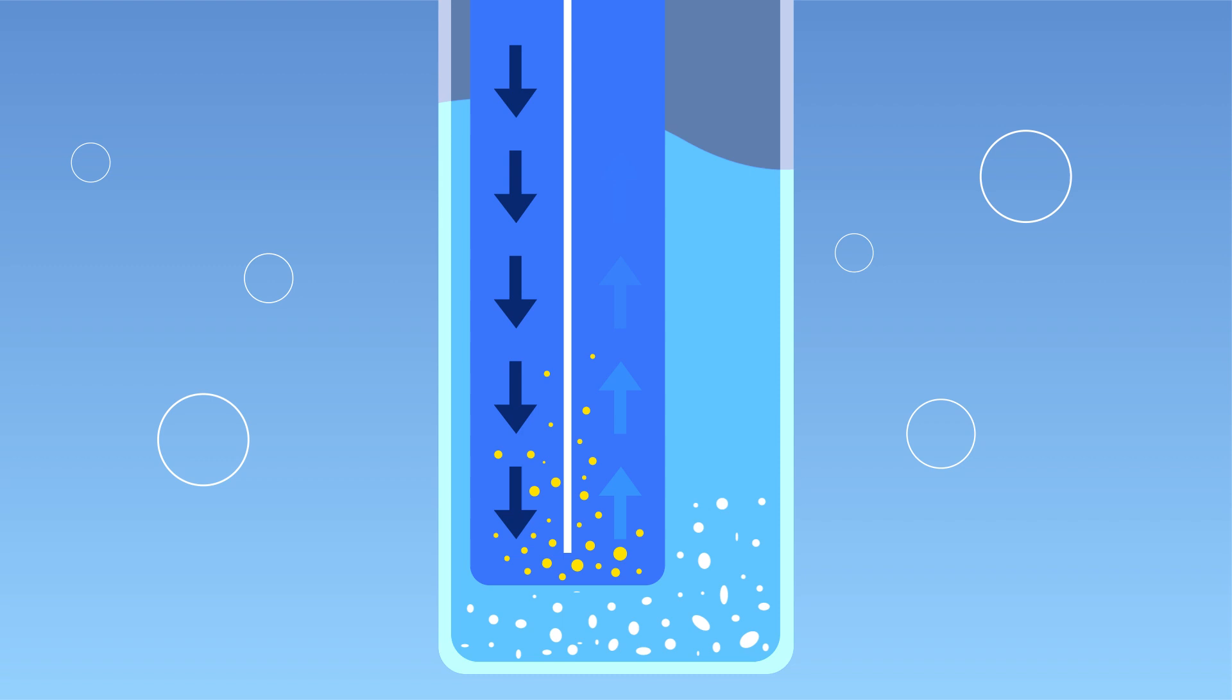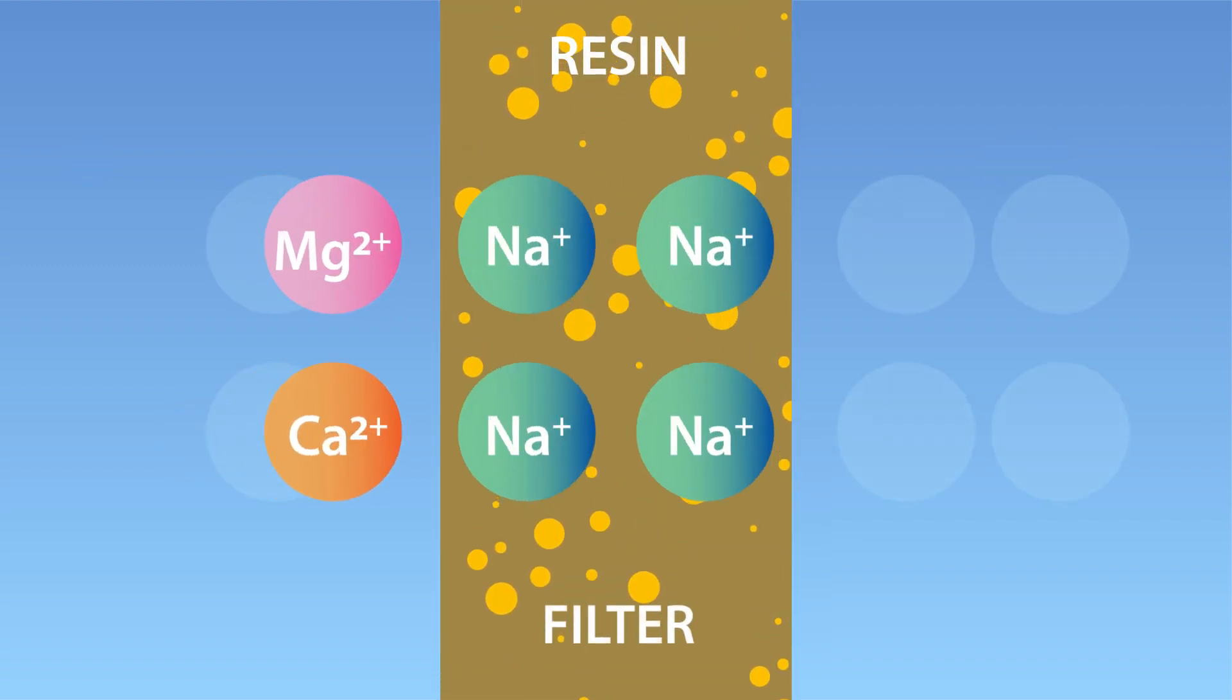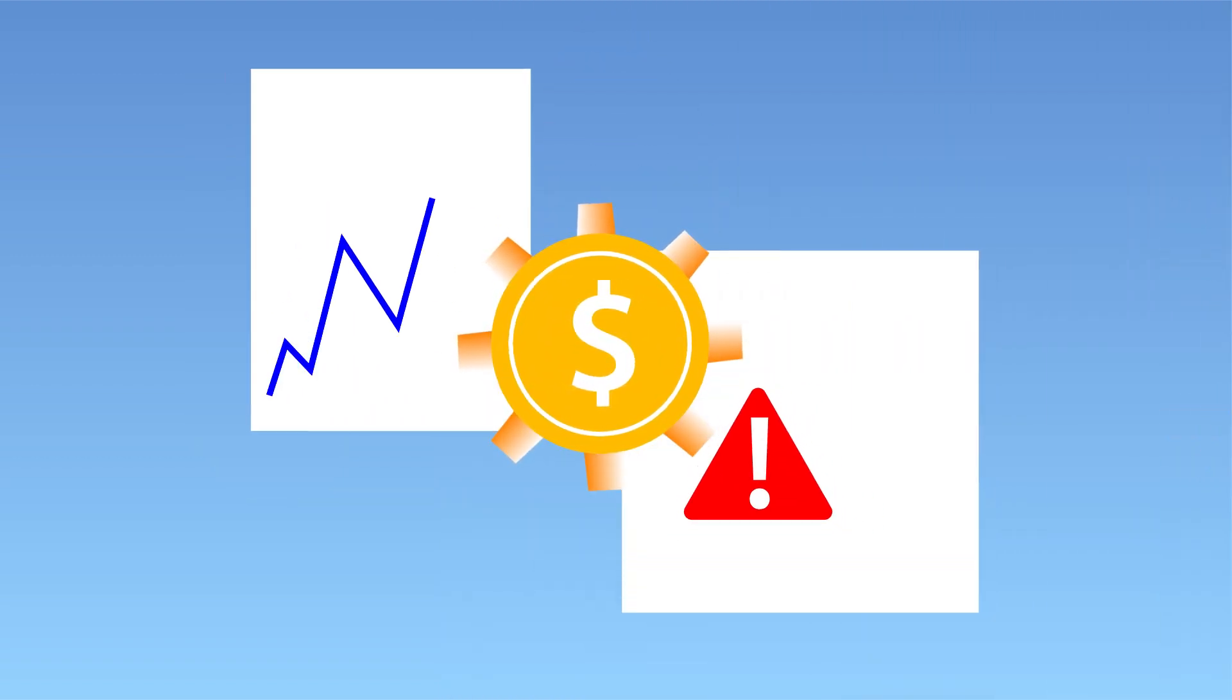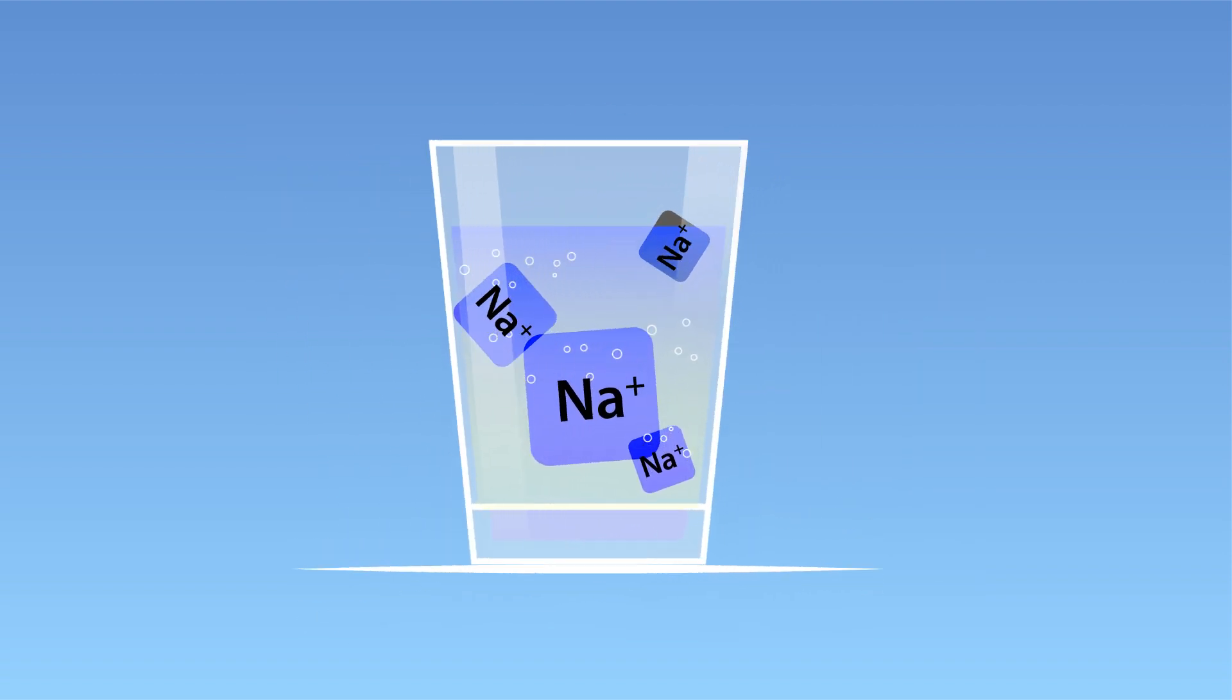Traditional water softeners work by exchanging these hard minerals, like calcium and magnesium, for soft minerals that don't build up and form scale. However, these systems come with a hefty maintenance cost and create soft water loaded with sodium that is neither healthy nor desirable to drink.